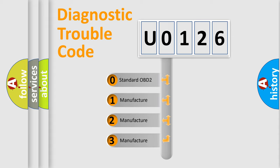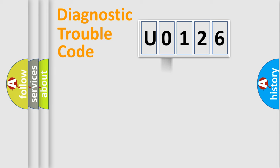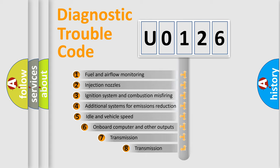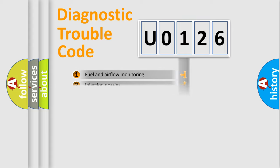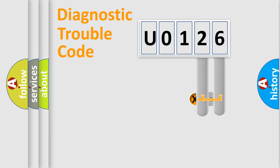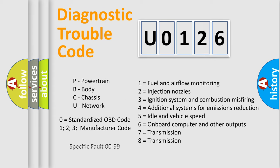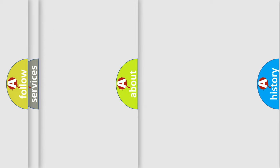If the second character is expressed as zero, it is a standardized error. In the case of numbers 1, 2, or 3, it is a manufacturer-specific error. The third character specifies a subset of errors. The distribution shown is valid only for the standardized DTC code. Only the last two characters define the specific fault of the group. Let's not forget that such a division is valid only if the second character code is expressed by the number zero.